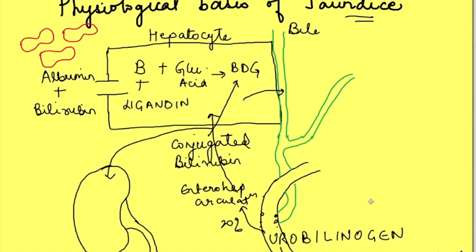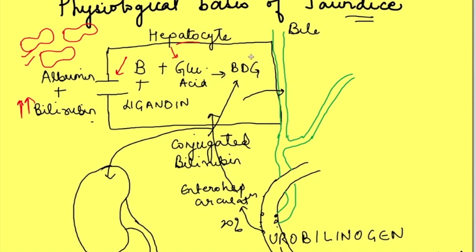Jaundice is the yellowish discoloration of tissues due to accumulation of excess bilirubin. Knowing the excretion mechanism of bilirubin helps us determine when bilirubin can accumulate. Either there is increased destruction of RBCs leading to increased production of bilirubin, or there can be a dysfunctional liver which interferes with uptake, conjugation, and excretion of conjugated bilirubin. Third, there can be obstruction of the bile duct so that bilirubin reaches the bile but cannot enter the small intestine.